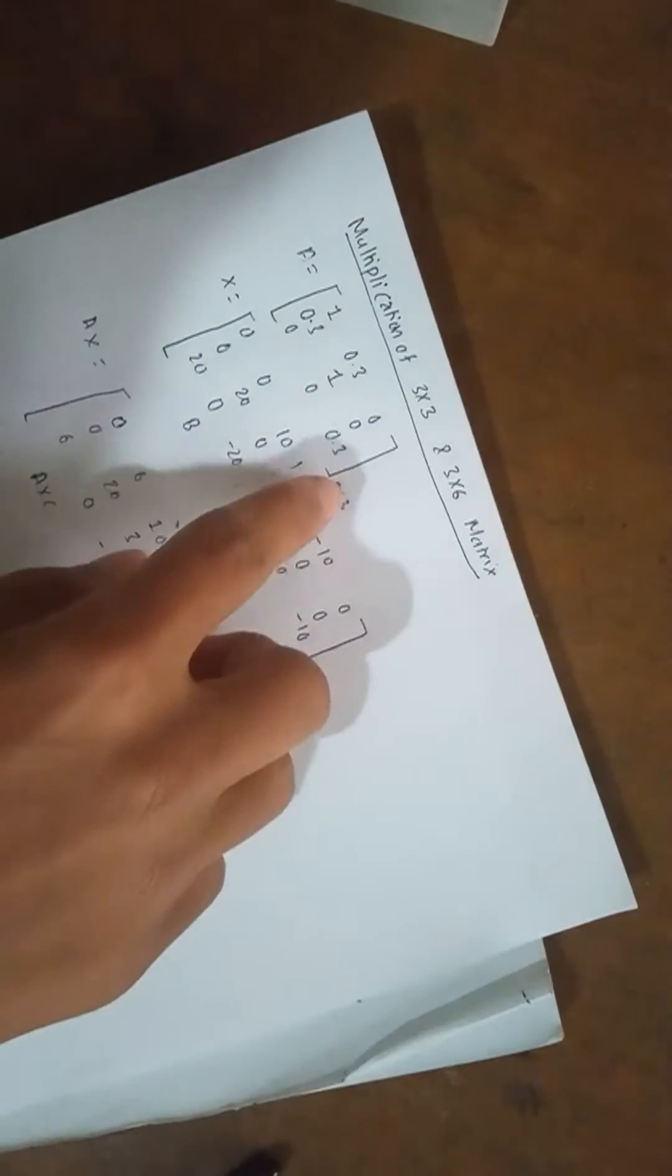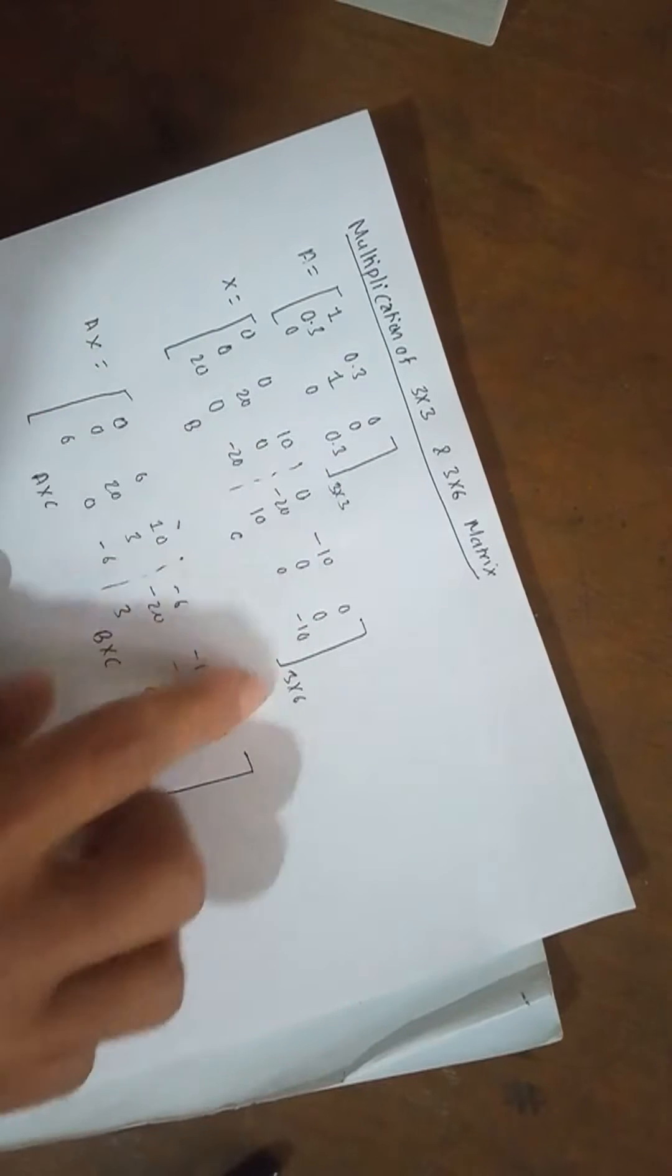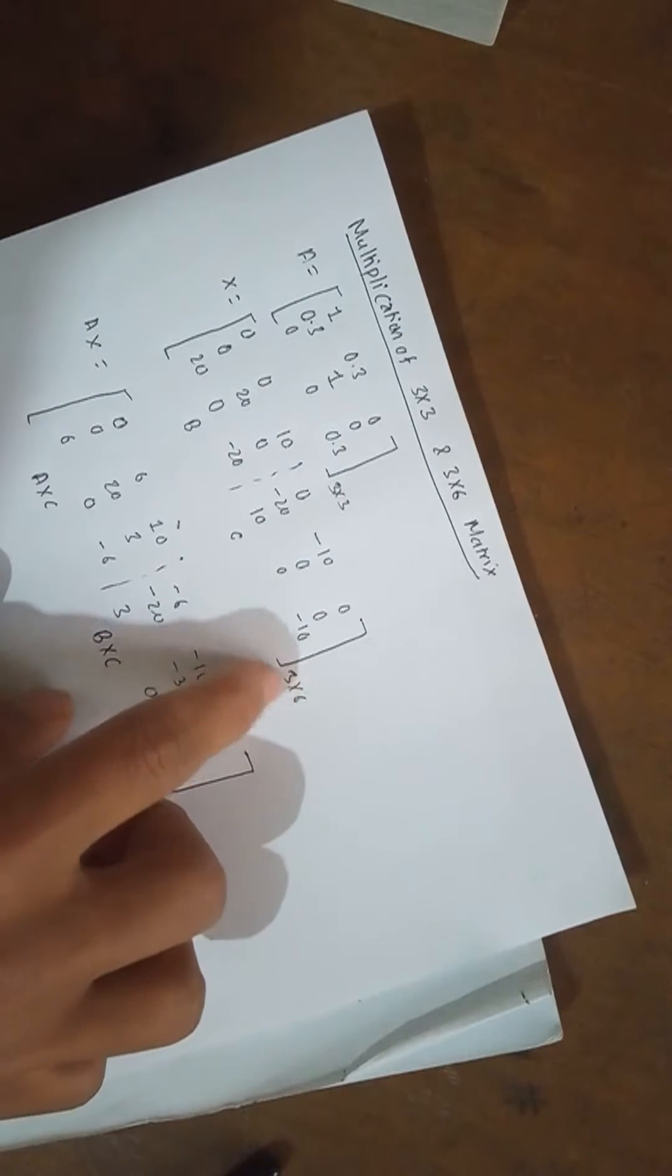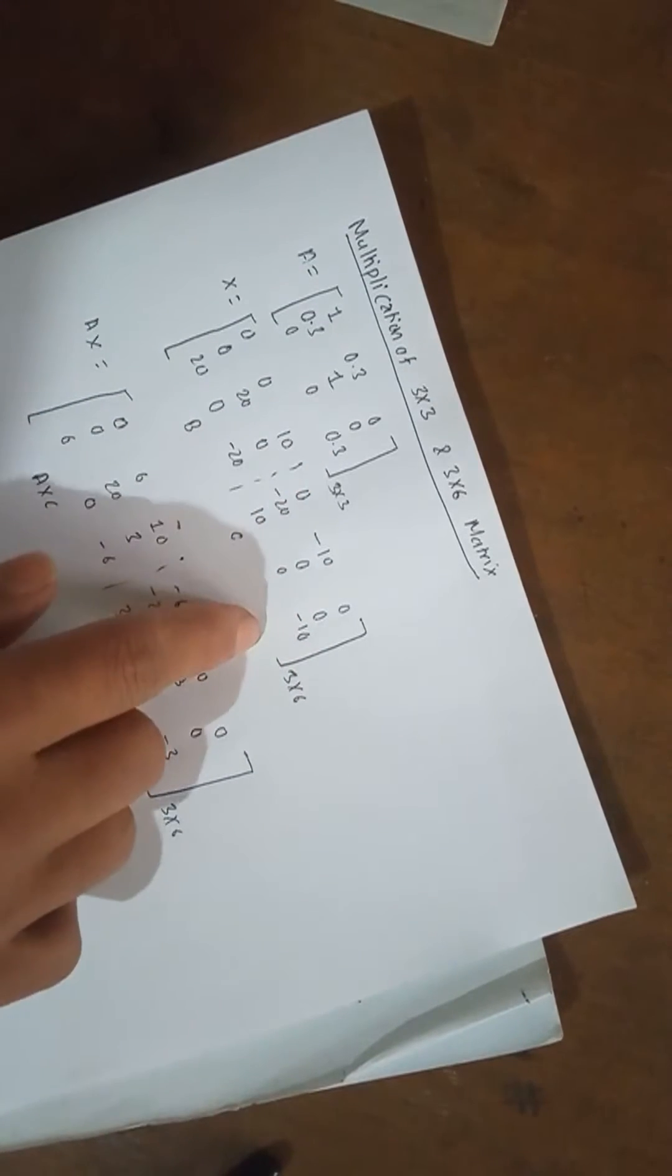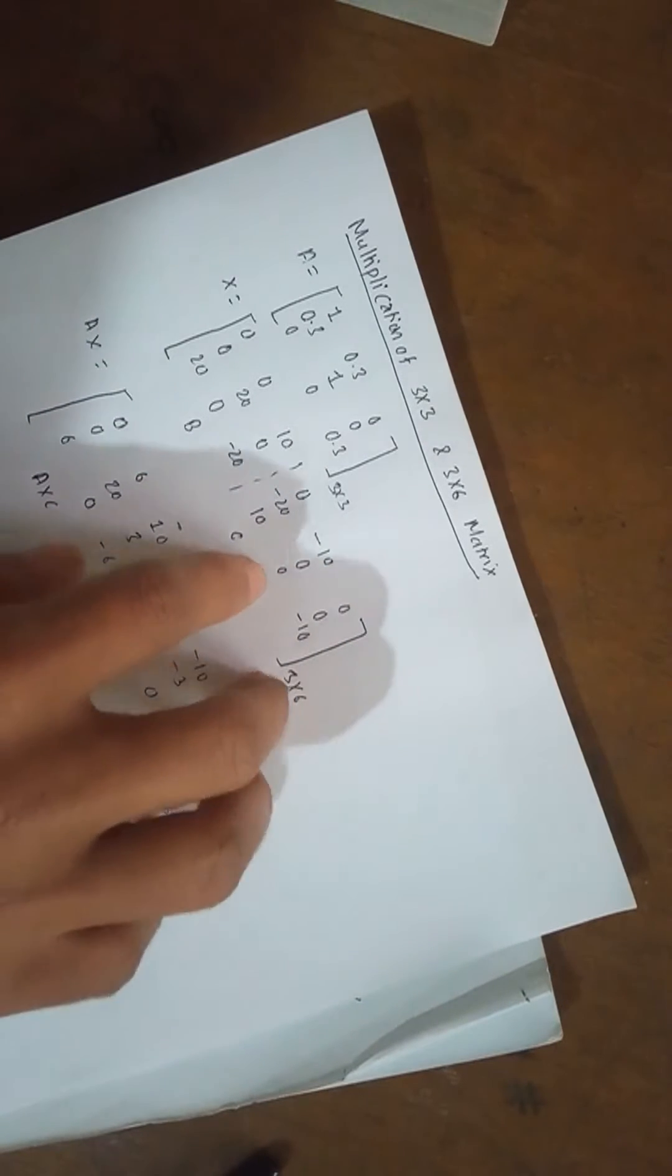We'll be solving 3 by 3 and 3 by 6 matrices. Matrix A contains 3 by 3 and matrix B contains 3 by 6 matrix, so we'll be dividing this into B and C of 3 by 3 while inputting into the calculator and later on will be assembling.